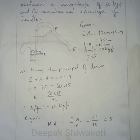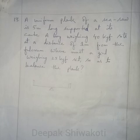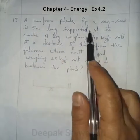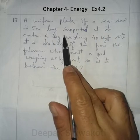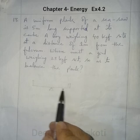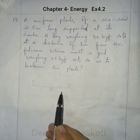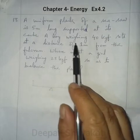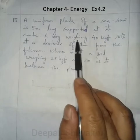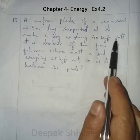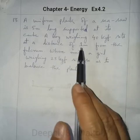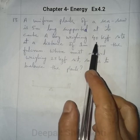Question number 13: A uniform plank of a seesaw is 5 metres long — that means the total length of the seesaw is 5 metres, supported at its centre. A boy weighing 40 kgf sits at a distance of 1 metre from the fulcrum. So this is the load and this one is the load arm.